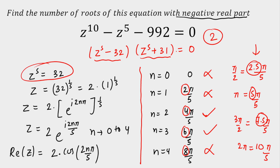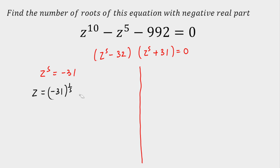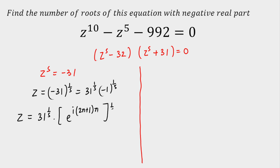Now let's focus on z raised to power 5 plus 31 equals 0, i.e., z^5 = −31. Using De Moivre's theorem, I write −1 as e raised to power iota(2n+1)π. So z equals 31^(1/5) times e raised to power iota(2n+1)π/5, where the (2n+1) ensures odd multiples of π, making cosine negative and sine zero.